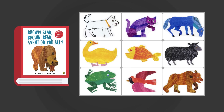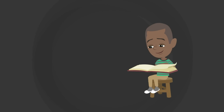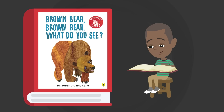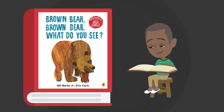Many of us fondly remember Brown Bear, Brown Bear, What Do You See?, and the delightful experience when a new animal would appear. This is an example of a predictable book. With predictable text, readers predict the next word that will appear, in some cases without even seeing the word. Knowing a word without even looking at the printed word is not reading.